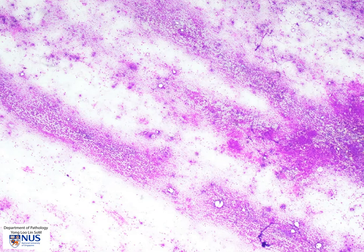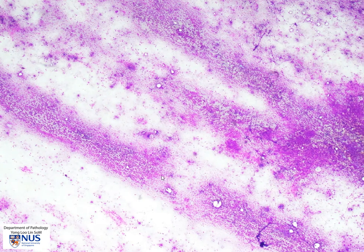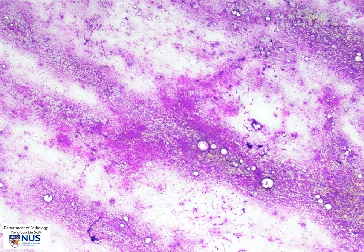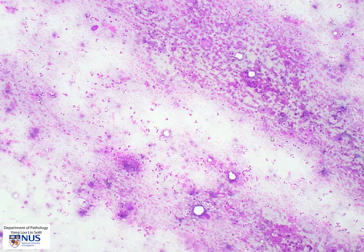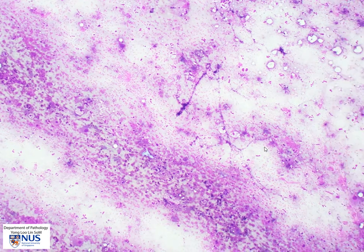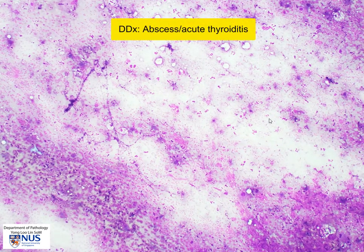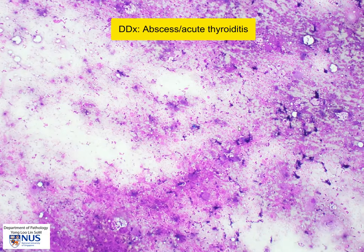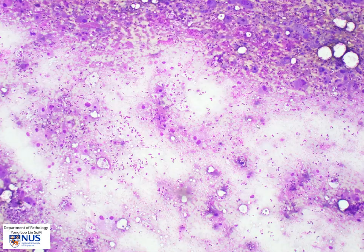Here is an air dried smear from another case and we can see that at low magnification there seems to be some inflammatory cells in the background. We start to then see these abnormal larger cells, but there are quite a lot of neutrophils in the background. Sometimes these tumors can almost look like an acute inflammatory process with only very sparse malignant cells. So we always have to look very carefully at the entire smear to make sure that there aren't tumor cells like these dotted throughout the inflammatory areas.